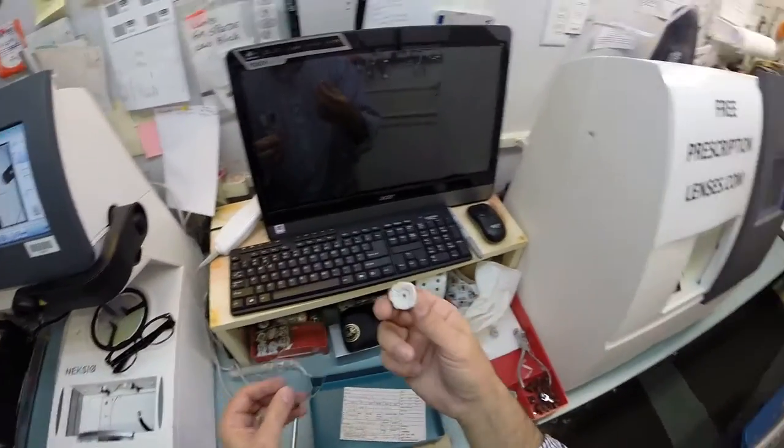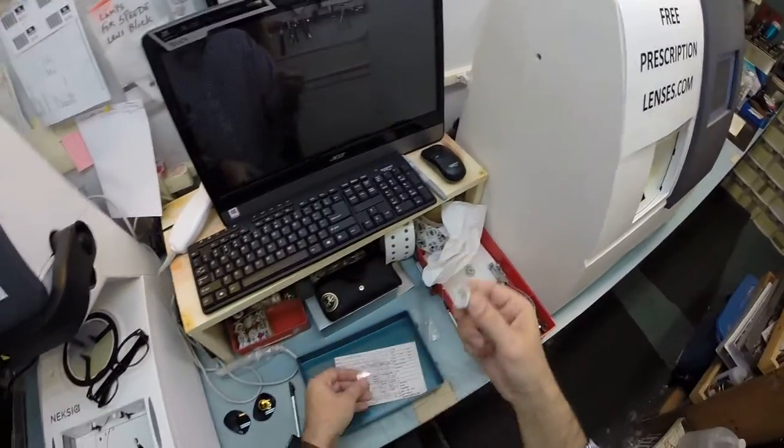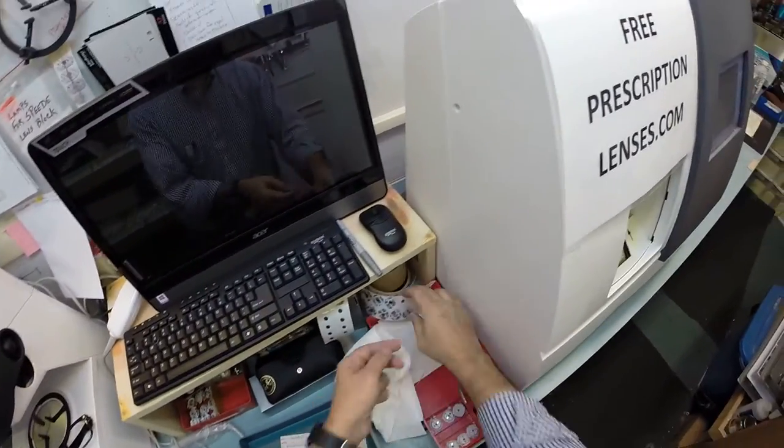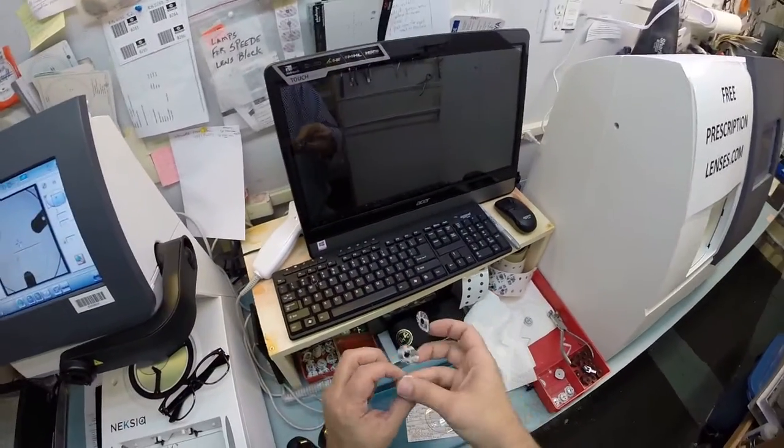Now this is a block. I like to call it Jenny from the block. But this is what attaches to your lens while it is cutting. So I need a double-sided adhesive sticker to apply to the lens to make sure that it will stick on there.